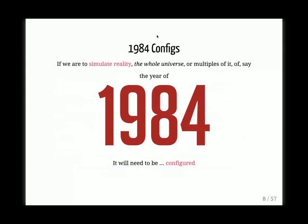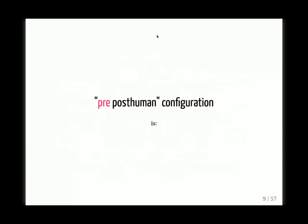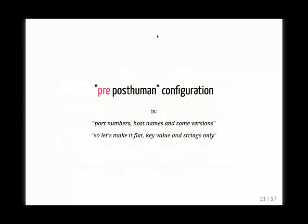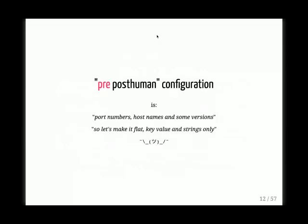You have to make sure that this high-fidelity simulation is one that people who live in it actually believe in. And yet, when we talk about configuration today, it's port numbers, hostnames, and some versions. So let's make it flat, key-value, and strings only. I think with a deeper meaning behind configuration, with Clojure and rich data structures and love for data, we can do a lot better than this.